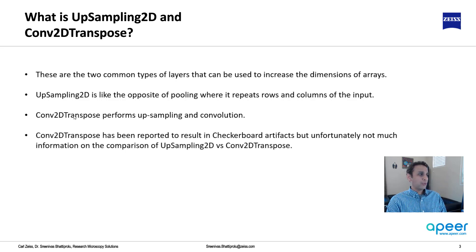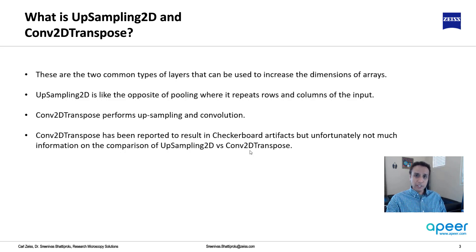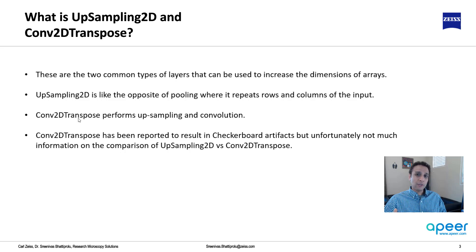If you want to figure out which one to use, I haven't personally seen much of a difference using either. However, Conv2DTranspose has been reported to result in checkerboard artifacts. Not much comparison between these two is out there in the literature — if you know any comparison paper please leave it in the comments. Personally, I prefer Conv2DTranspose because it actually learns during training, whereas upsampling has nothing to learn.